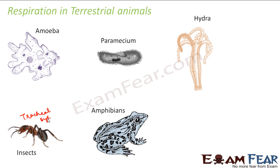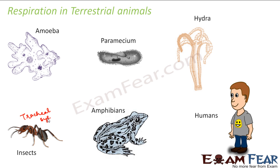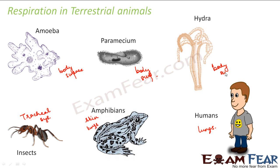In case of amphibians, they have lungs as well as their skin — their skin acts as a medium for diffusion of gases. In case of human beings, we have lungs. So in simple organisms, their body surface acts as the respiratory surface and there are no specialized organs. I hope you got some idea about how respiration happens in animals. You will understand it more clearly when I talk about the respiratory system in human beings.